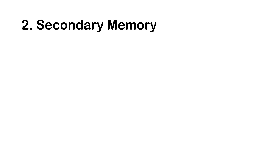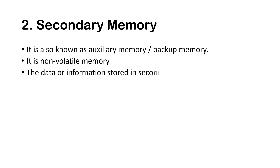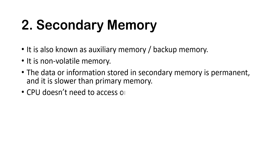Now let's discuss secondary memory. Secondary memory is also known as auxiliary memory or backup memory. It is non-volatile memory — the data or information stored in secondary memory is permanent. It is slower than primary memory, and the CPU does not need to access or process it immediately.